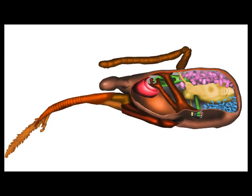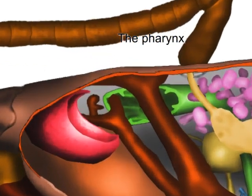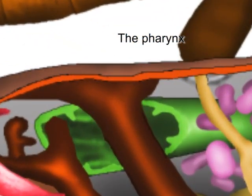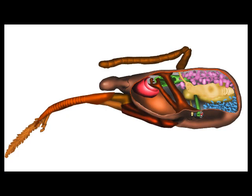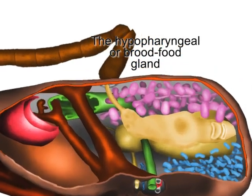Within the head, the main structures are the brain, the swallowing mechanism of the pharynx, the three pairs of saliva glands, the largest being the brood food gland or hypopharyngeal gland in front of the brain,